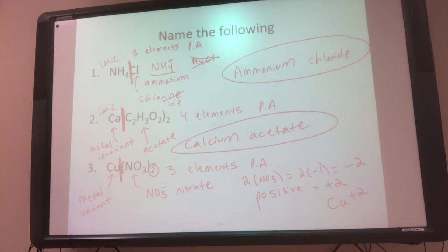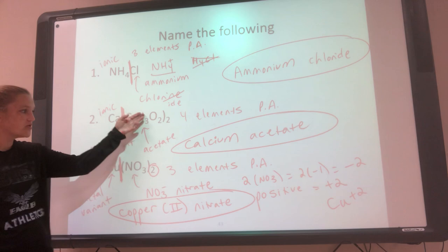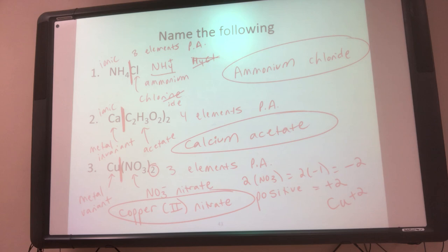So now I name it. Cu is copper, and since it's variant, I put the charge in Roman numerals. Then I say the name of the polyatomic ion. So the name is copper two nitrate. The process is always the same — the only difference is when you have a polyatomic, you have to recognize it and know its name. Now we can go from formula to name. Next we'll practice going the opposite direction: given the name, write the formula.